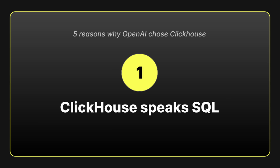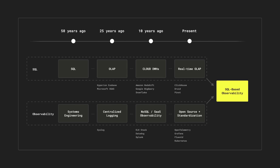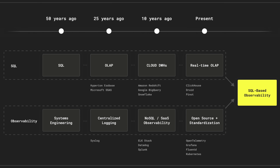So first up, ClickHouse speaks SQL. That means engineers don't have to learn a new query language — they can jump in with tools they already know. Observability has traditionally been its own silo with bespoke UIs or query languages. ClickHouse lets you treat observability as just another data problem you solve with SQL, aggregating logs, traces, and metrics in one place. And the result? Faster analysis without the friction of jumping between systems.